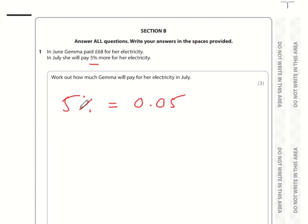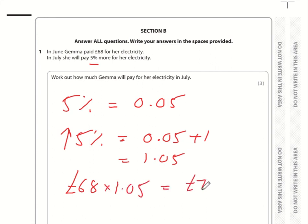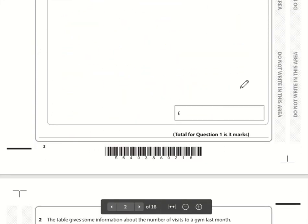So if you're working out 5% of an amount, you would multiply by 0.05. Now if you want to increase by 5%, you'd use this multiplier plus 1, in other words, you would use 1.05. So the calculation is £68 multiplied by 1.05, and that comes to £71.40.